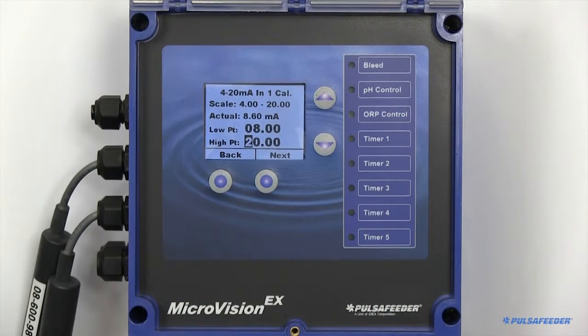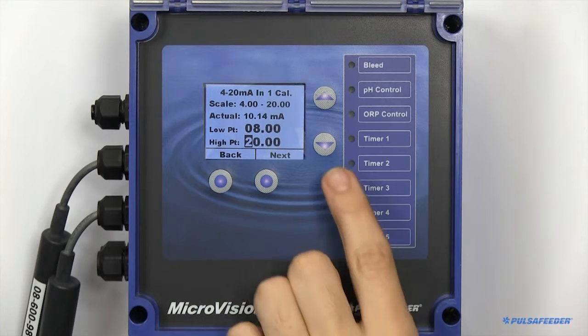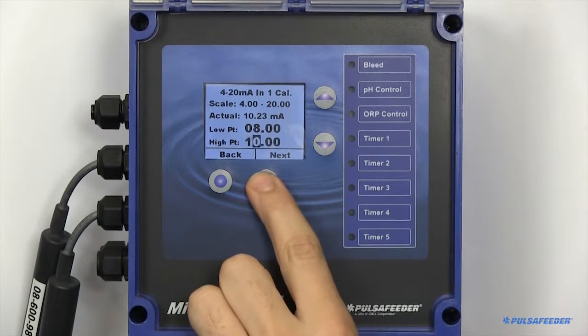Next, place your probe in your high buffer solution. Wait for your unit to adjust again. Enter the correlating value, and then enter through the bottom row. Your 4 to 20 input board should now be configured.